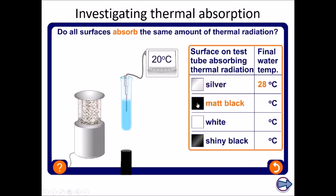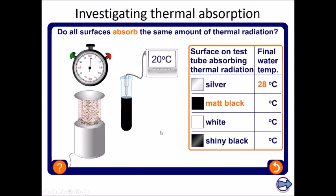Whereas if we do it with a matte black surface, the temperature gets much hotter. People are more familiar with this normally. So the temperature this time gets to 42 degrees C, because it's better at absorbing the heat radiation.